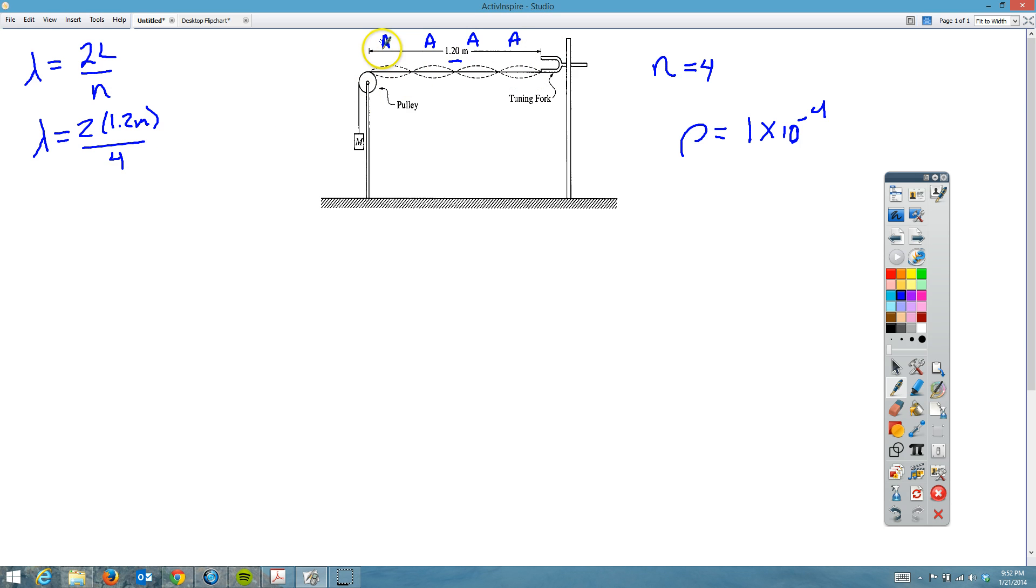When you work through the calculation, you should end up with 0.6 meters. Your substitutional values are worth one point and then the 0.6 meters itself is the second point.